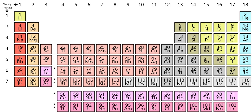Specific regions of the periodic table can be referred to as blocks, in recognition of the sequence in which the electron shells of the elements are filled. Each block is named according to the subshell in which the electron notionally resides. The S block comprises the first two groups — alkaline metals and alkaline earth metals — as well as hydrogen and helium. The P block comprises the last six groups, which are groups 13 to 18 in IUPAC group numbering, or 3A to 8A in American group numbering, and contains, among other elements, all of the metalloids.